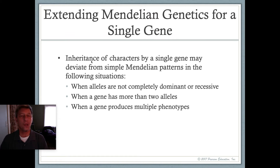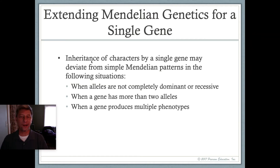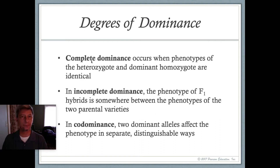A second situation is when a gene has more than two alleles, which can make things a little complicated. And finally, when a gene can produce multiple phenotypes — in other words, more than two phenotypes.